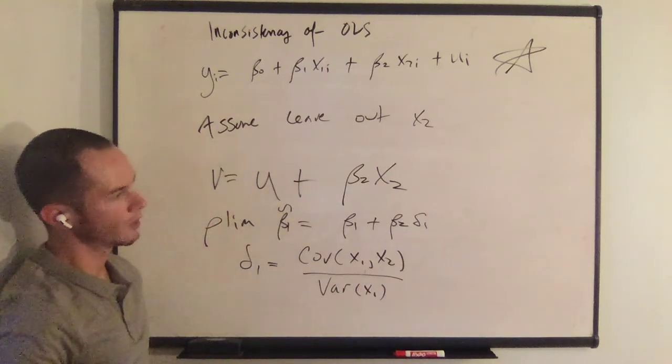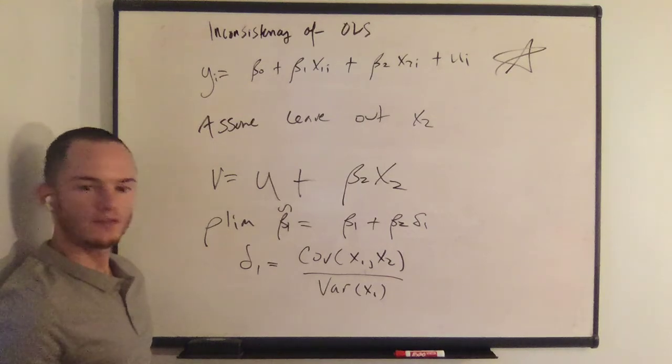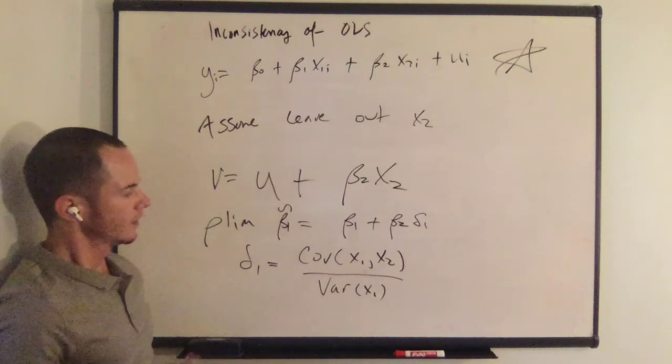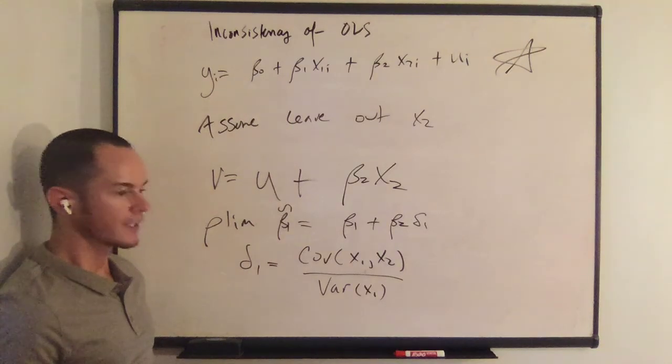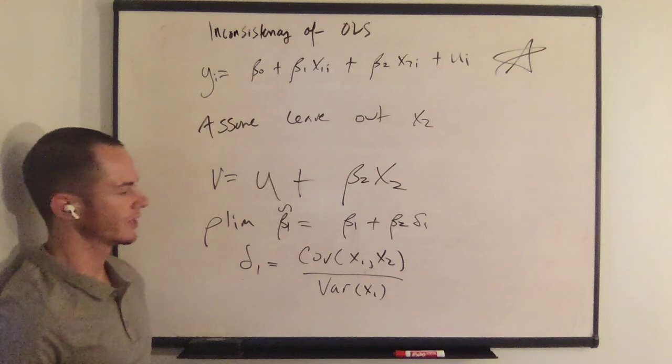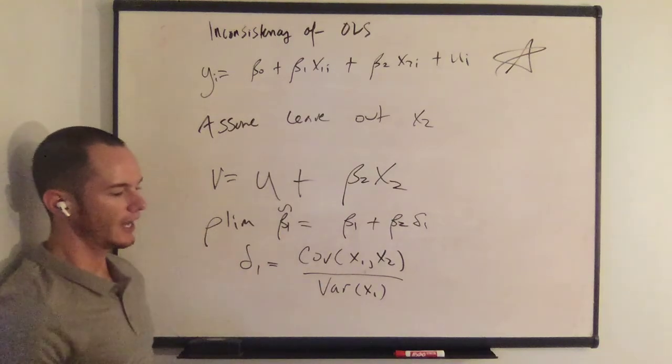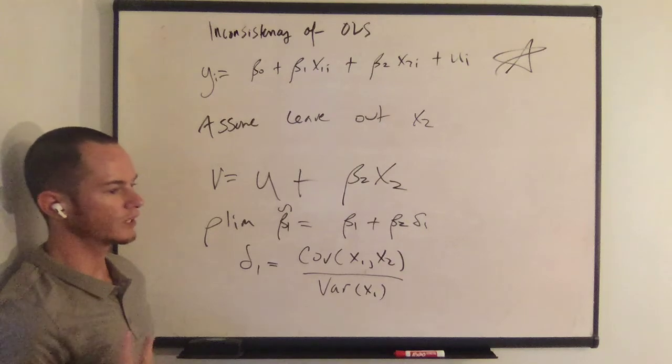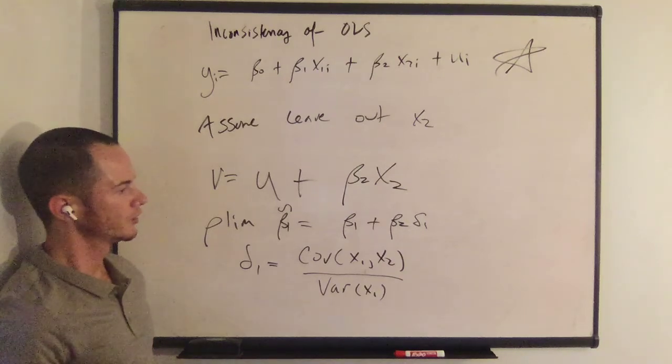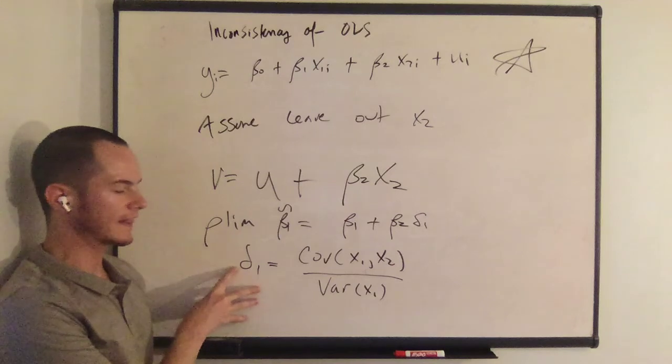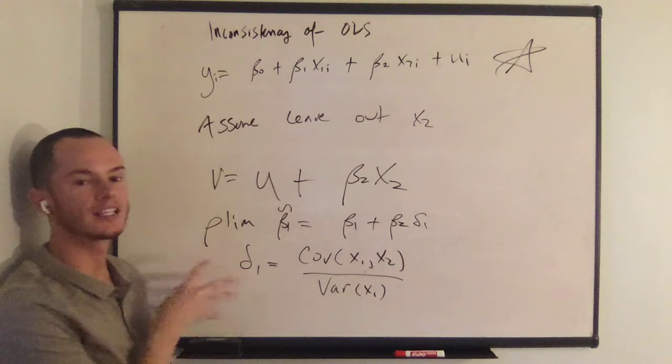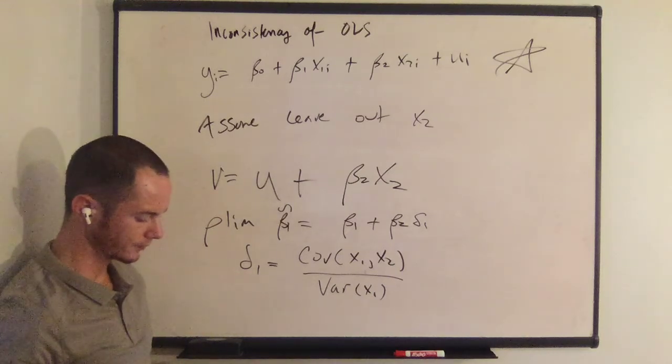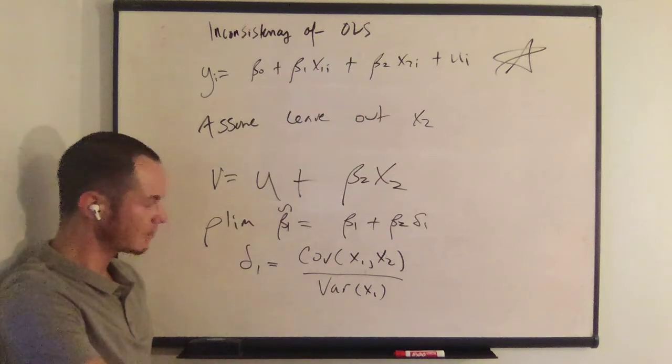So for practical purposes, we can view this definition of inconsistency as the population counterpart to the sample statistic of bias. Because this is how we have described bias. And what we're saying is that when the sample grows really large, you still have this characteristic about OLS. And what we're saying is that at this point, this is the inconsistency of OLS.